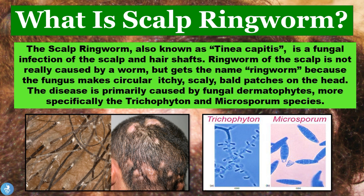So tinea capitis is a fungal infection of the scalp and the hair shafts. It's caused by two main specific types of fungi: trichophyton and microsporum. As we can see here, these are the microscopic images of them, and it's called ringworm because it causes this circular ring-like formation of infection in patients, which sort of resembles a ring.